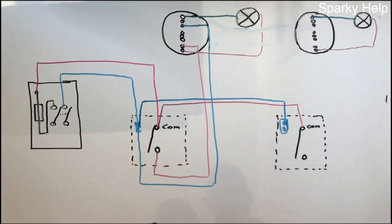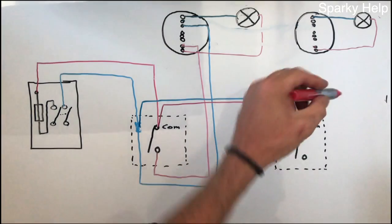So we now have a twin and earth cable coming into this point, and we repeat the system again to wire into our next light.